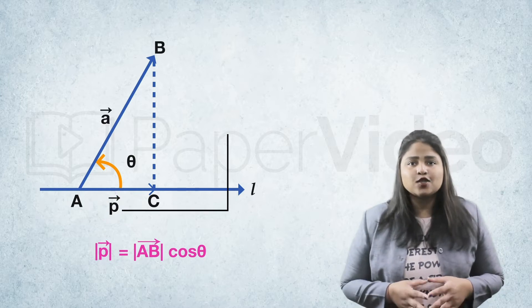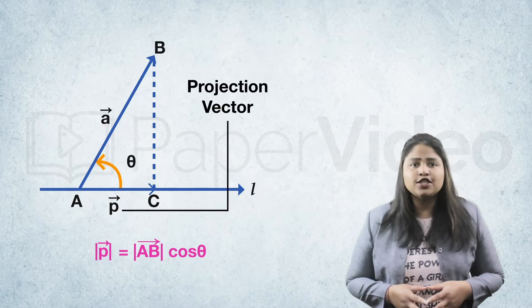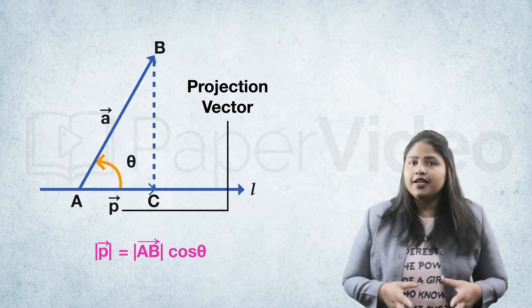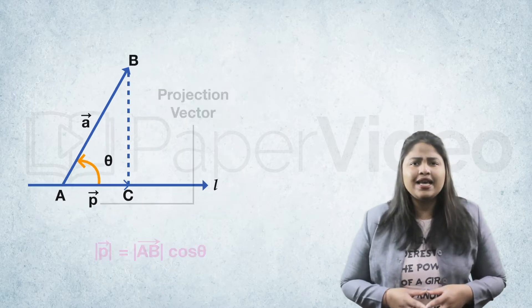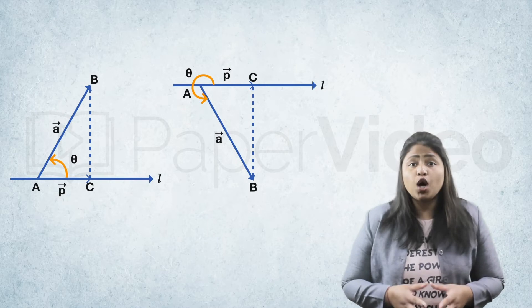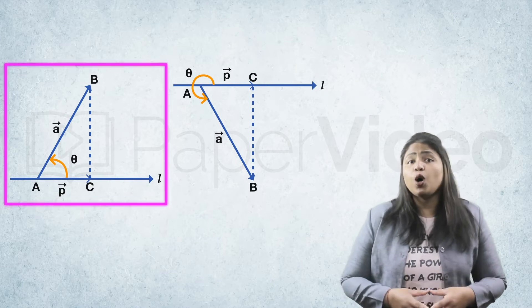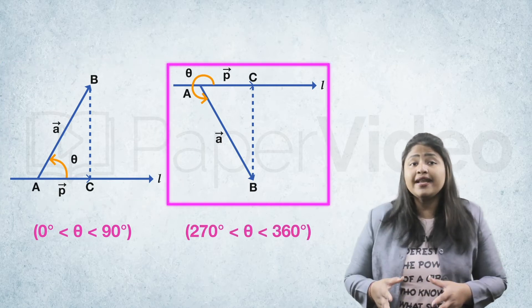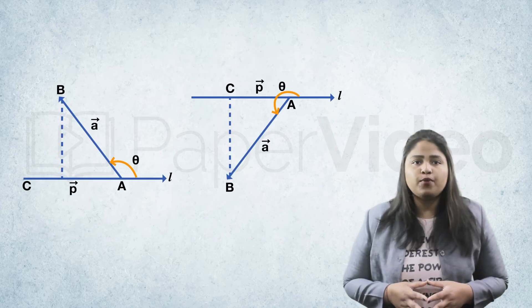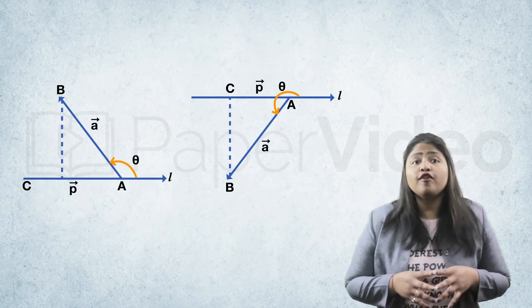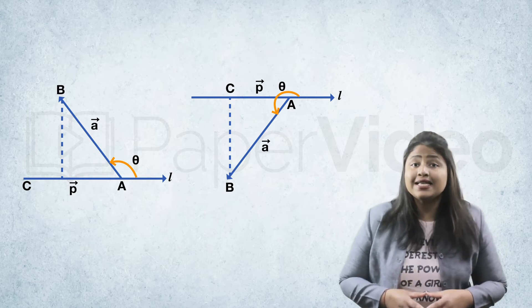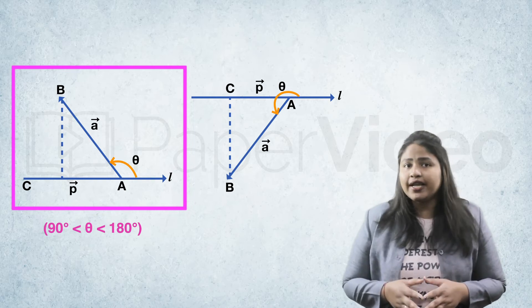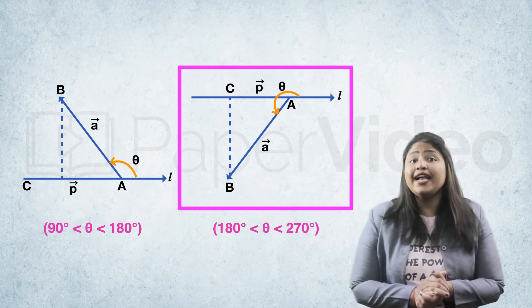The vector P is called the projection vector, and its magnitude is called the projection of vector AB on the directed line L. The direction of the projection vector P is the same as the direction of line L if cos theta is positive, or theta lies between 0° and 90°, or between 270° and 360°. The direction of the projection vector P is opposite to that of line L if cos theta is negative, or theta lies between 90° and 180°, or between 180° and 270°.